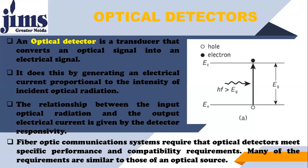A fiber optic communication system requires that the optical detector meets specific performance and compatibility requirements. Many of these requirements are similar to those of optical source, because optical source and optical detector both use a diode. The same diode can be used as an optical source as well as an optical detector.